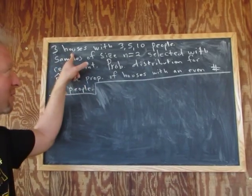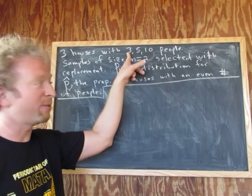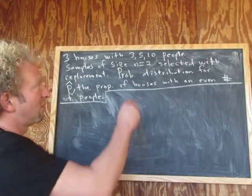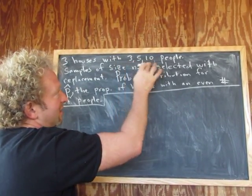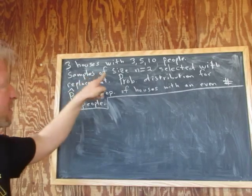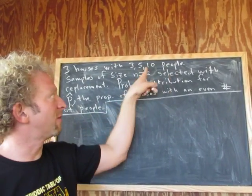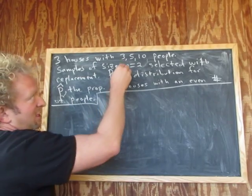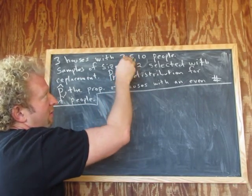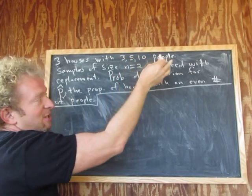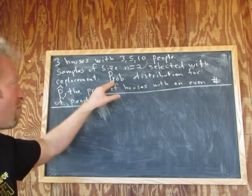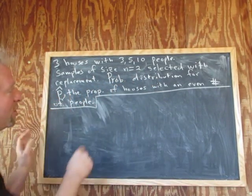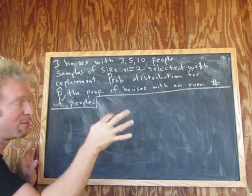We have three houses. In the first house there's three people, in the second house there's five people, and in the third house there's ten people. So this is our population: 3, 5, and 10. We want samples of size n equals 2, taken from this small population with replacement. We're going to construct the probability distribution for p-hat — that's the sample proportion — which is the proportion of houses with an even number of people.